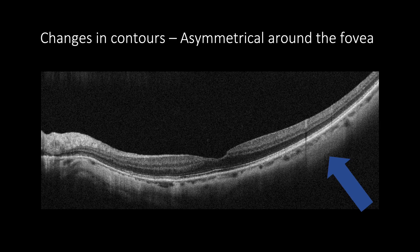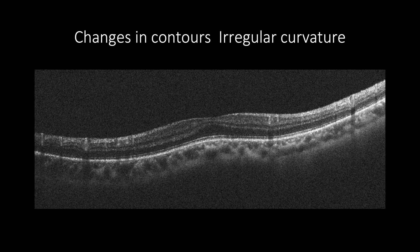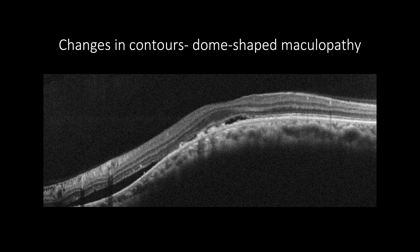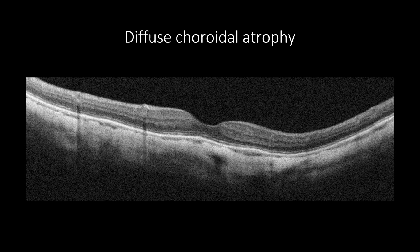Other patterns include asymmetrical curvature around the fovea or irregular curvature. Rarely, the macula looks convex, creating dome-shaped myopic maculopathy, which may be associated with subretinal hypo-reflective spaces. In diffuse chorio-retinal atrophy, the choroid is thinned and may have only a large choroidal vessel remaining under the RPE.